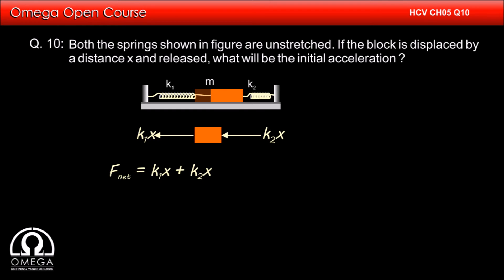Therefore, the net force on the block is k₁x + k₂x, which implies ma = k₁x + k₂x, or a = (k₁x + k₂x)/m. This is our answer.